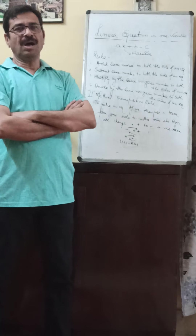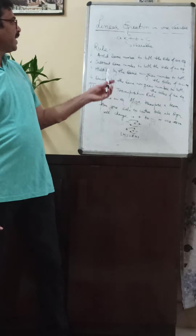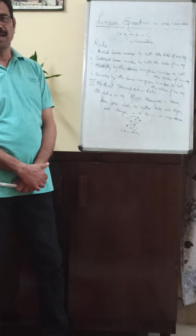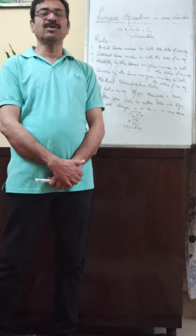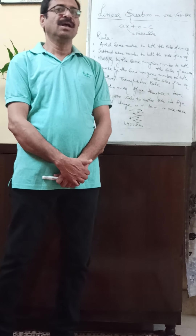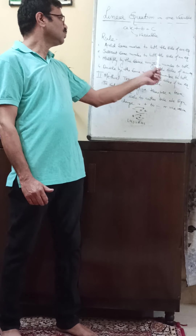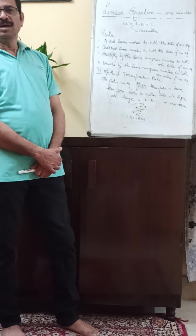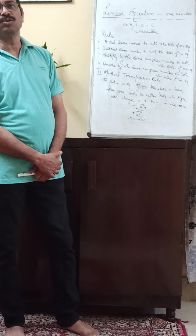Now I will explain you how to solve a linear equation. There are some rules. First is that if we add the same number to both sides of the equation, the equation will remain unchanged. Second, we can subtract the same number from both sides of an equation. Third, we can multiply by a non-zero number to both sides. Fourth, we can divide by a non-zero number to both sides of an equation.